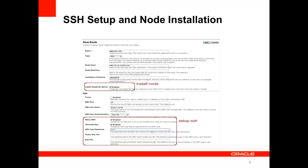We've also added the ability to automatically set up SSH and install nodes via the console. This was a feature available via the command line — you can see them in red text: install node and set up SSH. We now have the ability to execute these commands via the console. So you can install GlassFish remotely using the console to manage instances. Setting up SSH can be a little difficult for those new to SSH. We had a command line tool, as-admin set-up-SSH, that would make that a lot easier, and that's now something you can do via the console as well.